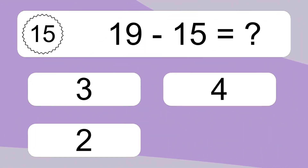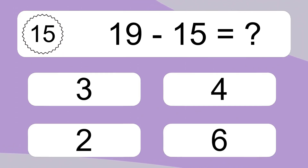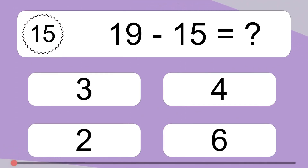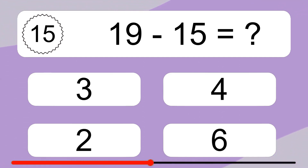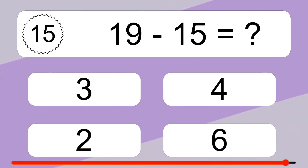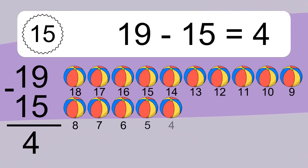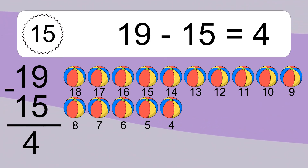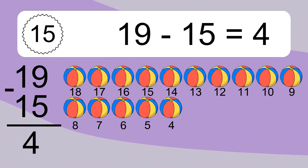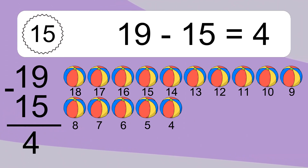19 minus 15 equals what? 19 minus 15 equals 4. Let's count it: 18, 17, 16, 15, 14, 13, 12, 11, 10, 9, 8, 7, 6, 5, 4.